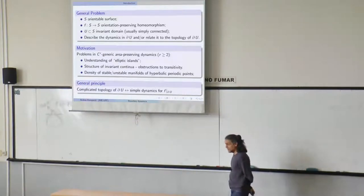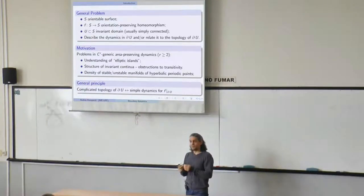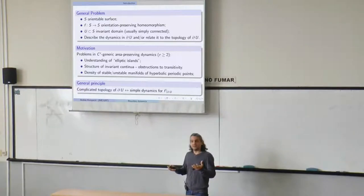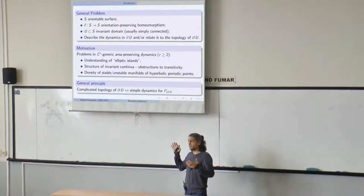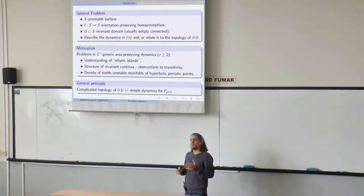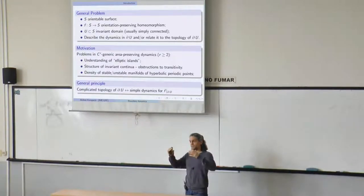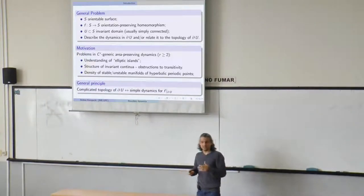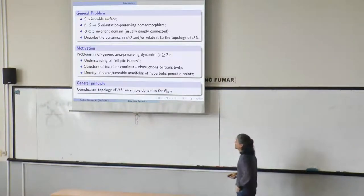Another related question: when you take the stable manifold of a hyperbolic periodic point and look at its closure, you have a compact connected invariant set. The connected components of its complement — if the map is area-preserving — are open periodic sets. These sets have a nice boundary in the sense I was describing. So if you want to understand the closure of the stable manifold of a periodic point, it makes sense to study the boundary of the complementary invariant sets.